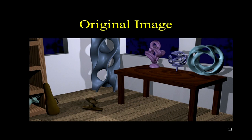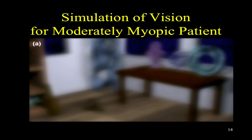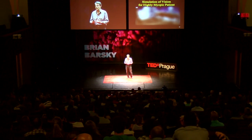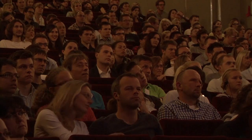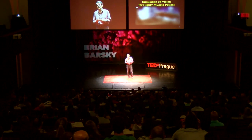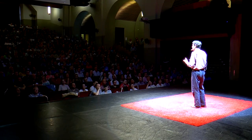Here's a computer-generated original image that is perfectly sharp and in focus. I'll show you how we simulate it using real data measured from various patients. The first example is someone who is moderately myopic — nearsighted in a way that's not too serious — and I'm sure many of you in this audience see without your eyeglasses or contact lenses something like this: a very smooth blur. Now for someone with high myopia, the same type of problem but much greater — for people like this, you wake up in the night and cannot even focus on the clock radio on the table.